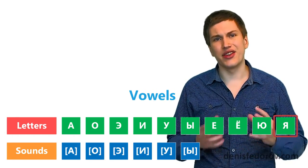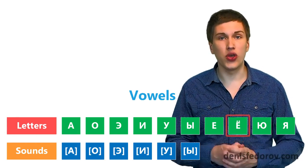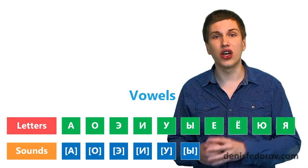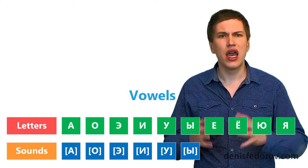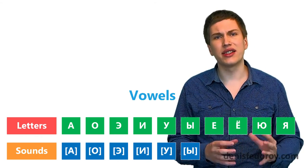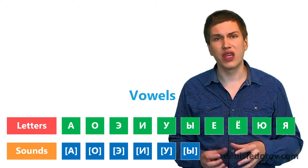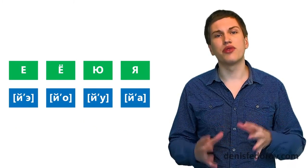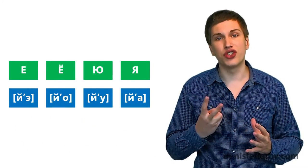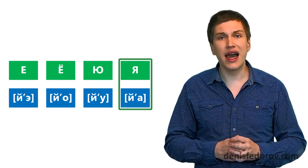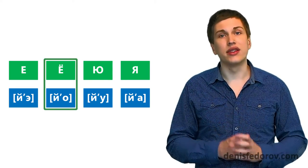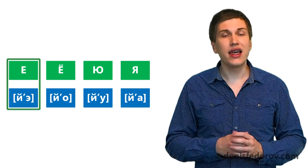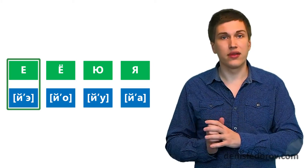The thing is that Я, Е, Ё, Ю are letters that are not directly represented by their own sounds. And you will not find these letters in brackets in transcription. It's because these letters are represented by combinations of two sounds. Я is йа, Е is йэ, Ю is йу, Ё is йо. It's the basic simple explanation.